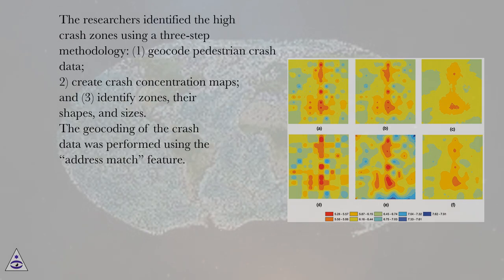The researchers identified the high-crash zones using a three-step methodology. 1. Geocode pedestrian crash data. 2. Create crash concentration maps. 3. Identify zones, their shapes, and sizes. The geocoding of the crash data was performed using the address match feature.